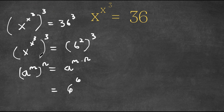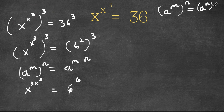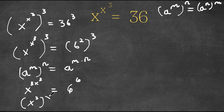And in this case, this would equal x to the power of 3x to the power of 3. Now if we have something in the form a to the power of m to the power of n, this is also equal to a to the power of n to the power of m. So then x to the power of 3 to the power of 3 times x to the power of 3 would equal x to the power of 3 to the power of x to the power of 3.